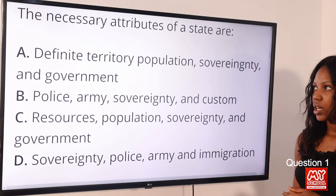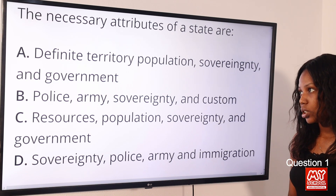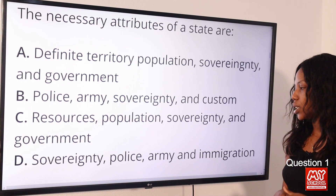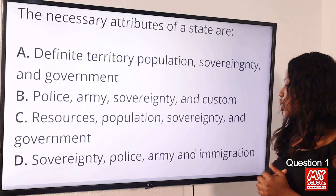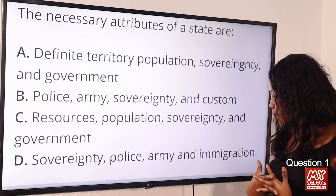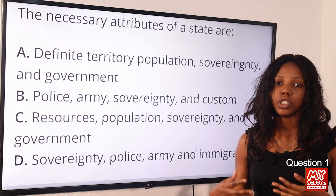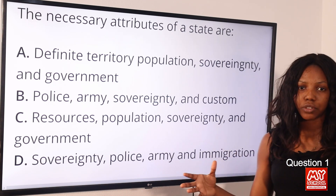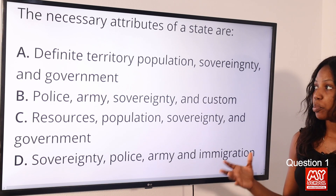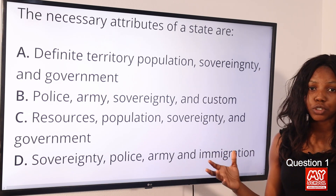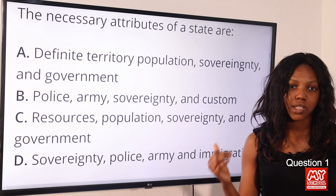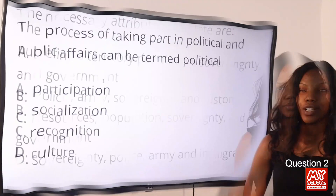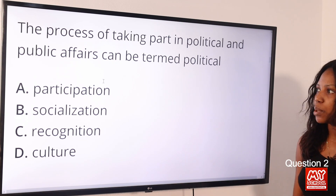Question 1: The necessary attributes of the state are — option A: definite territory, population, sovereignty, and government; option B: police, army, sovereignty, and custom; option C: resources, population, sovereignty, and government; option D: sovereignty, police, army, and immigration. The answer is option A, because it defines what a state should have: a defined territory, a population, sovereignty, and a government.